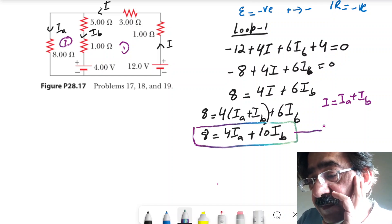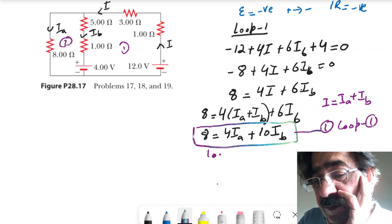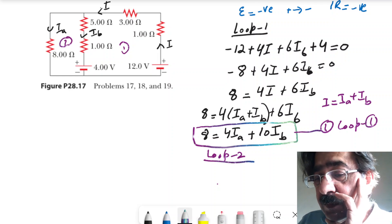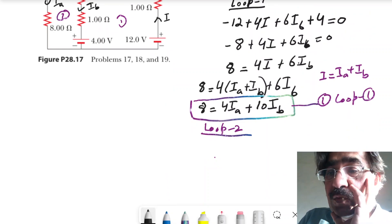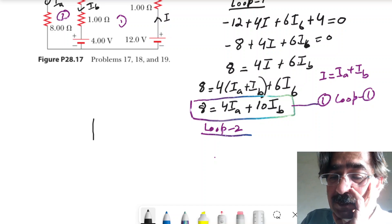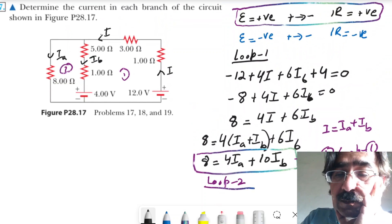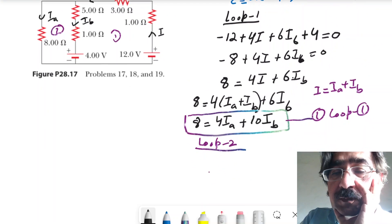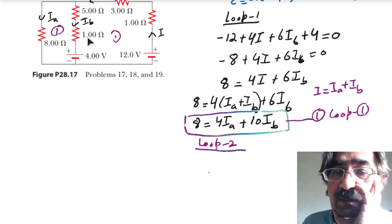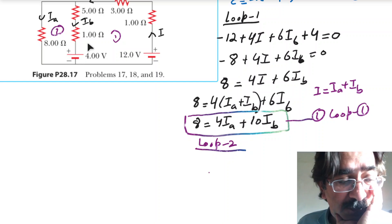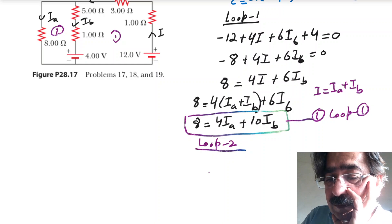We have equation one for loop one. Now we consider loop two. For loop two, the current ib passes through resistances five plus one, which gives six ohms, so we have six ib.